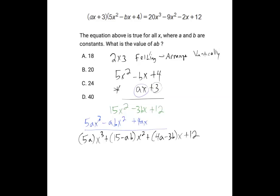So what we did is we factored out the x cubed, and we have the 5a in front of that. We factored out the x squared, and so we've got 15 minus ab in front of that. And the x, leaving us with 4a minus 3b. Now, in both of these situations, we put the positive first, because it kind of cleans up more nicely that way. And then we just have the 12 at the end.